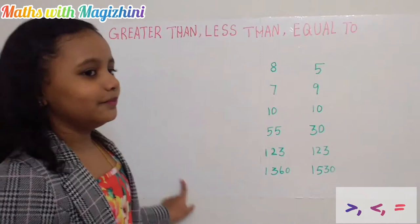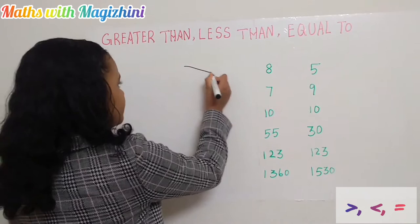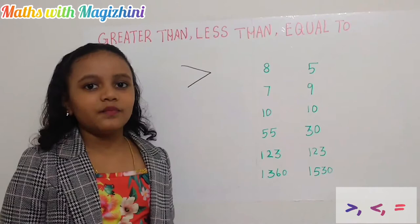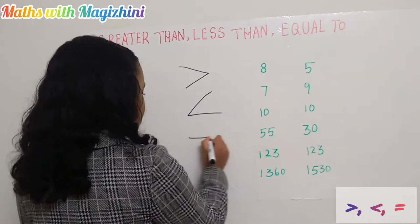Let's try these symbols now. The first one is the greater than symbol. Then the next one is the less than symbol. And the next one is the equality symbol.